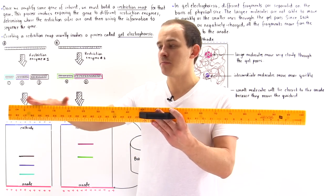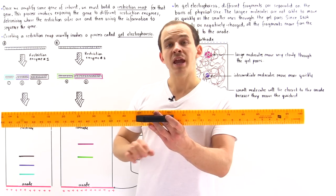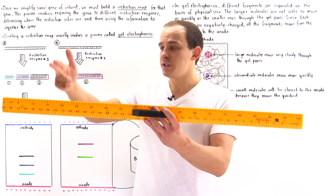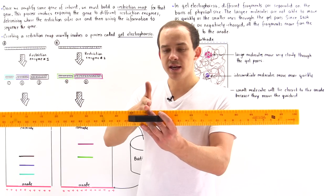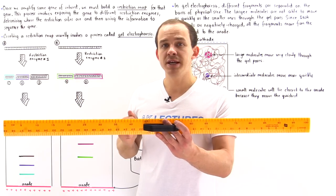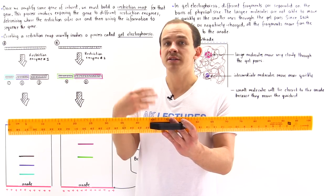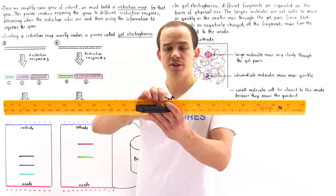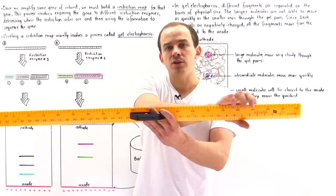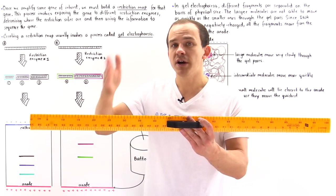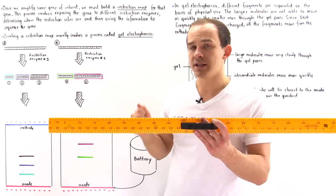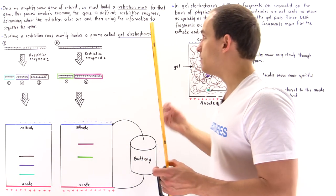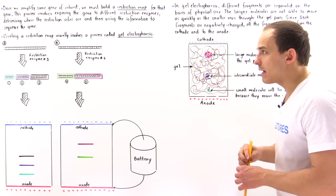For example, let's suppose this gene has three different restriction sites — here, here, and here. What that means is a type of restriction enzyme can bind onto these three locations and cleave that particular gene at those locations. So that's what we mean by a restriction map.